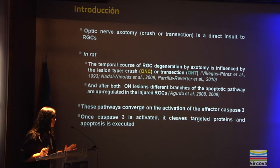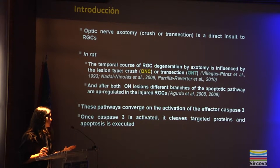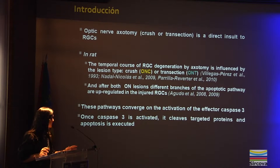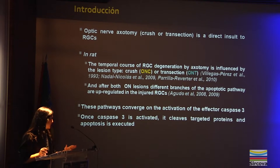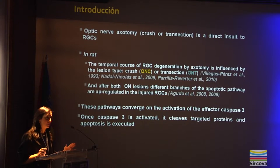After both optic nerve lesions, different branches of the apoptosis pathway are regulated in the injured ganglion cells. This pathway converges on the activation of active caspase-3. When caspase-3 is activated, it cleaves targeted proteins and apoptosis is executed.